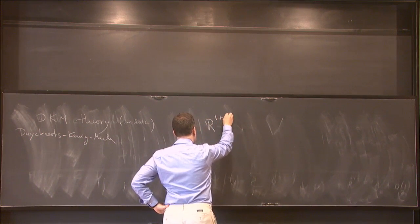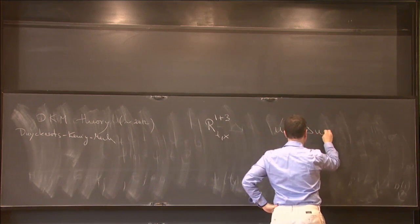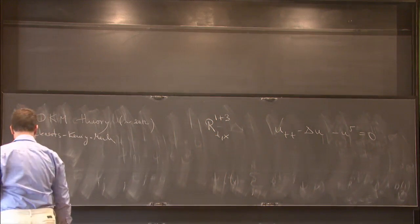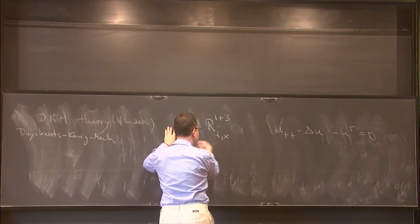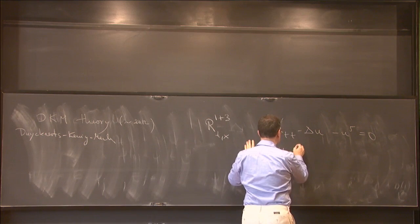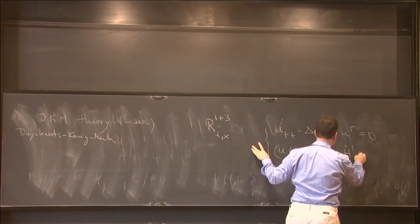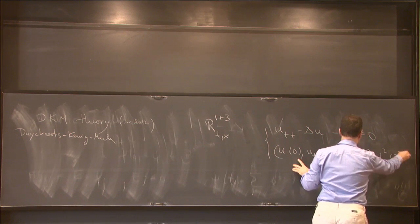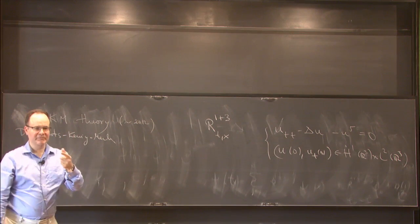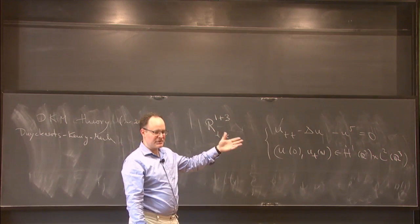We'll look at the wave equation in 1+3 dimensions: u_{tt} - Δu - u^5 = 0. Why this equation? It is a very special equation. First, local well-posedness: if your data are in Ḣ¹(ℝ³) × L²(ℝ³), then you have local well-posedness. This is a focusing sign — very important — which makes everything interesting.